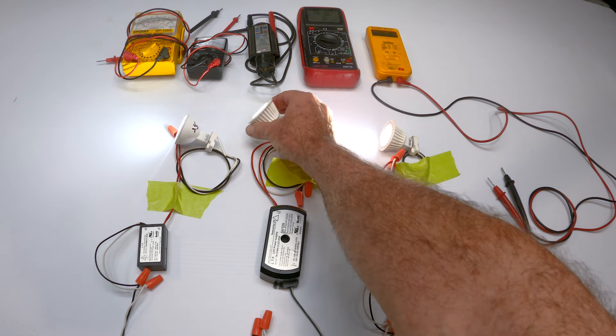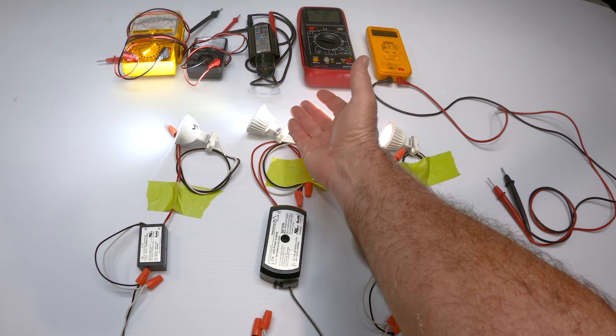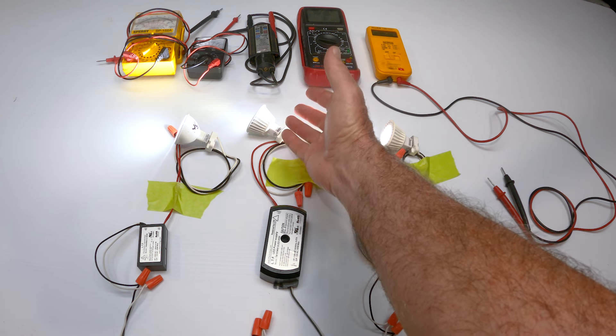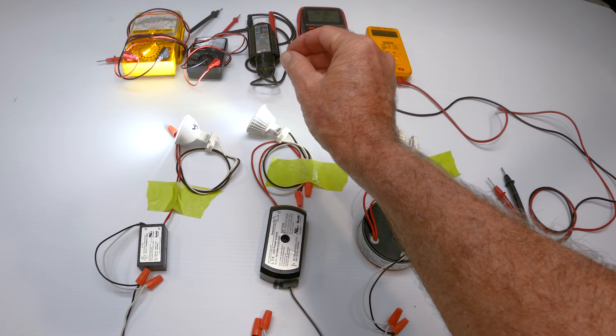And the reason is, the LED dimmer has electronics built for an electronic LED transformer and an electronic LED bulb. If you remember, the old halogen bulbs are really just an old school light bulb with a filament and halogen gas. There's no electronics, it's just a burning filament.